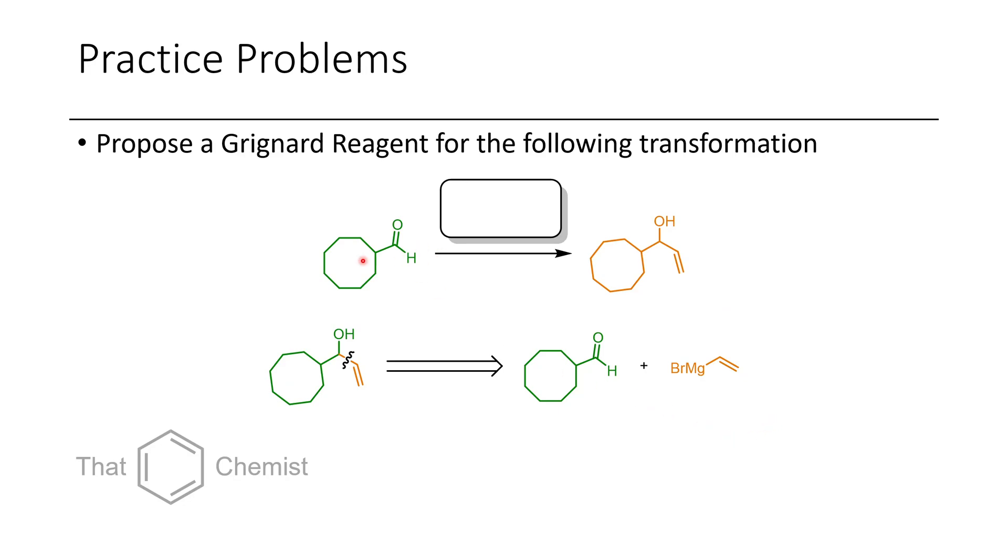In this next example, we first take this aldehyde and treat it with some sort of Grignard reagent. So once again, we do a retrosynthetic disconnection. Here I've colored the right portion orange and the left portion green.